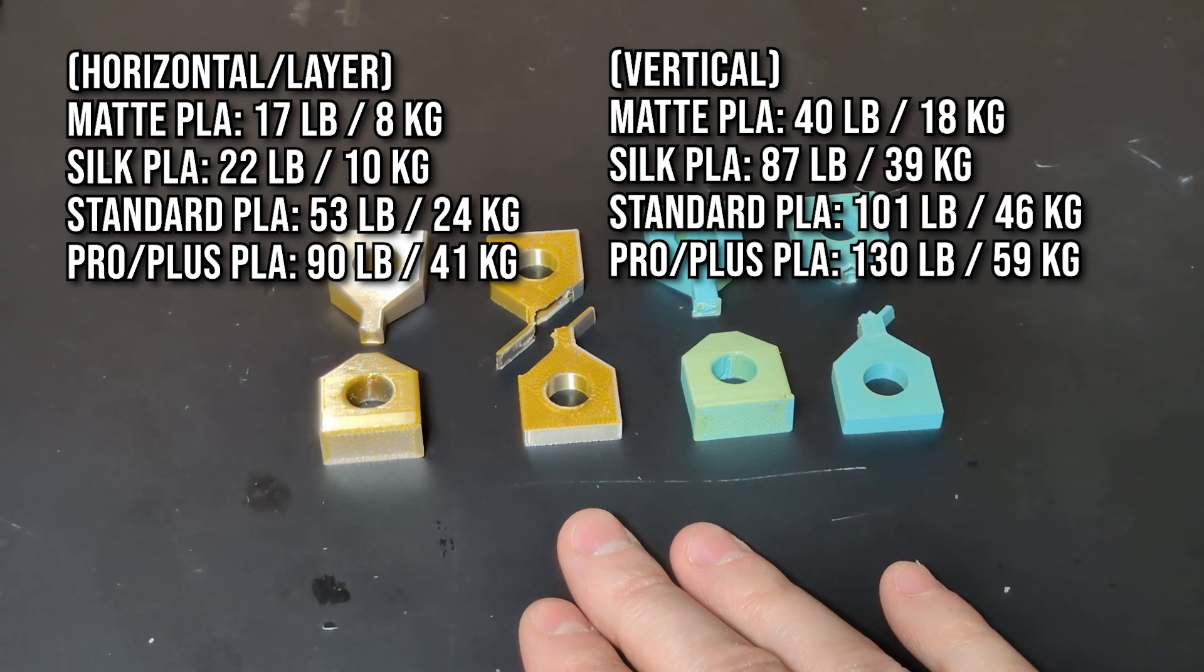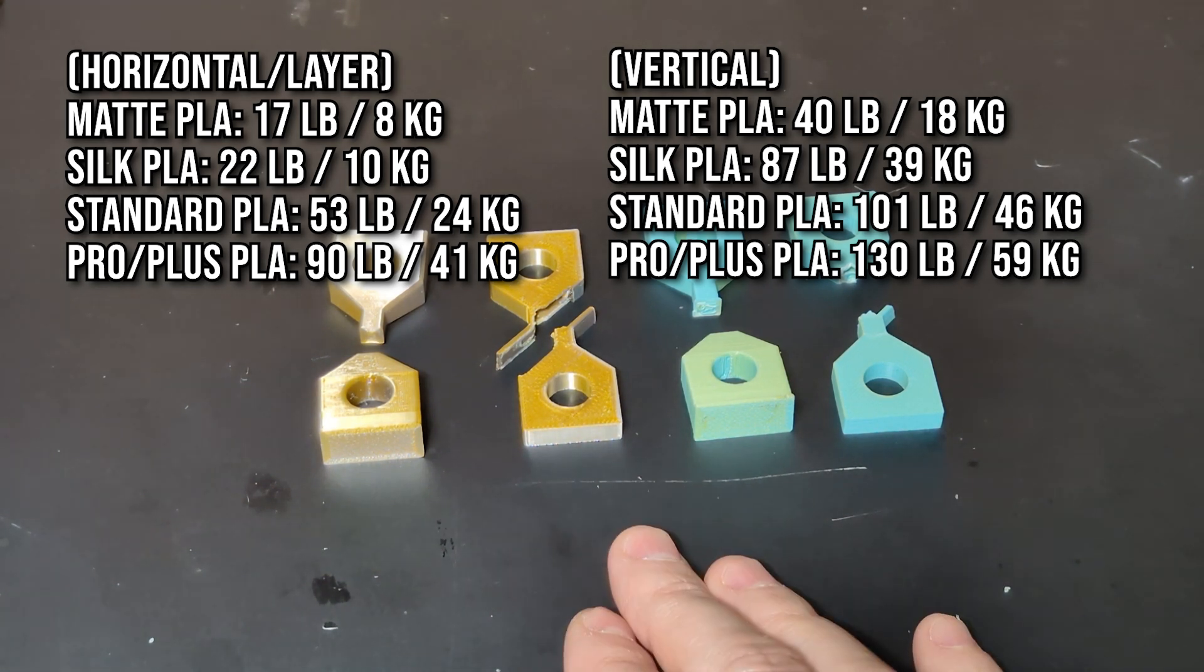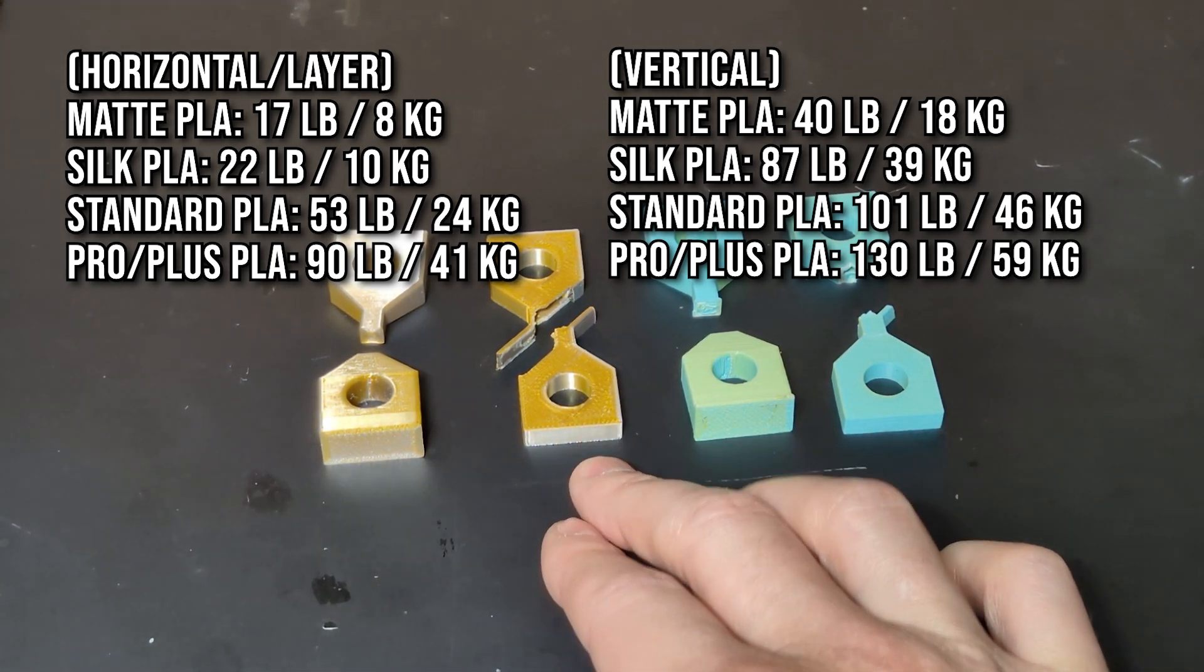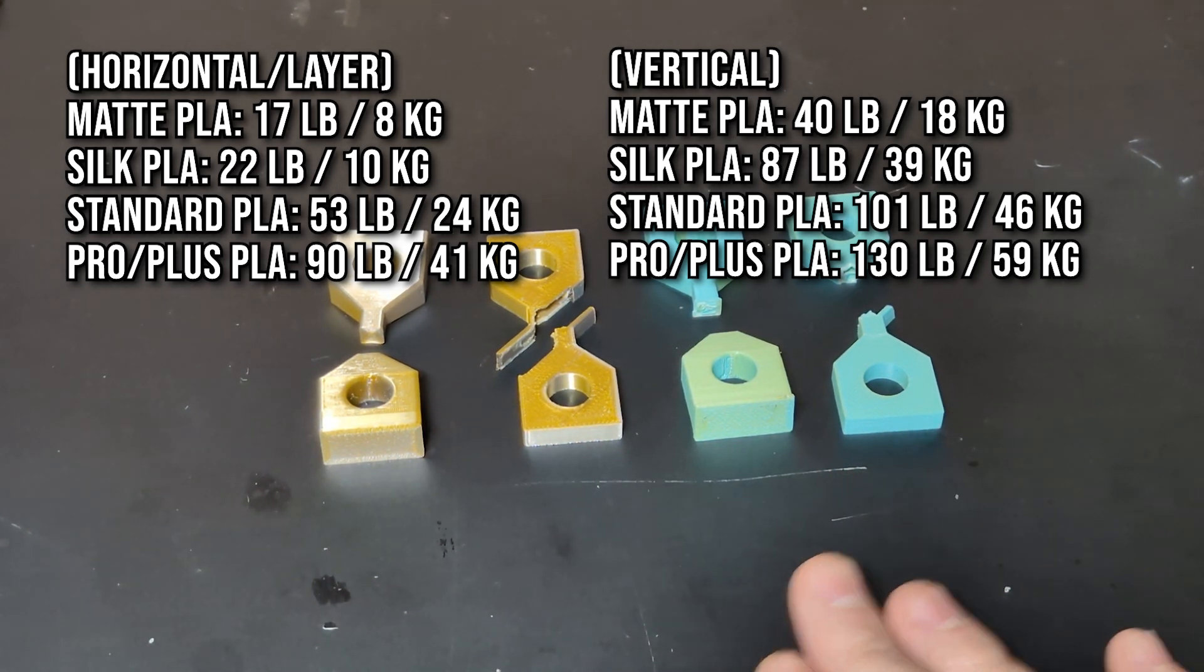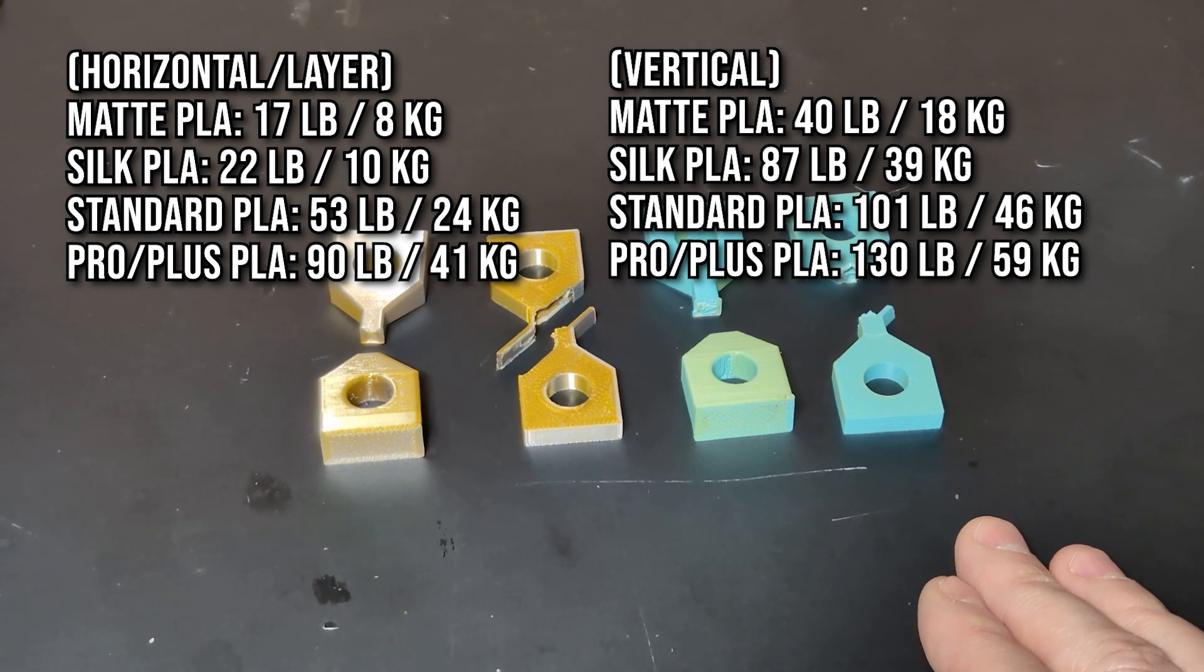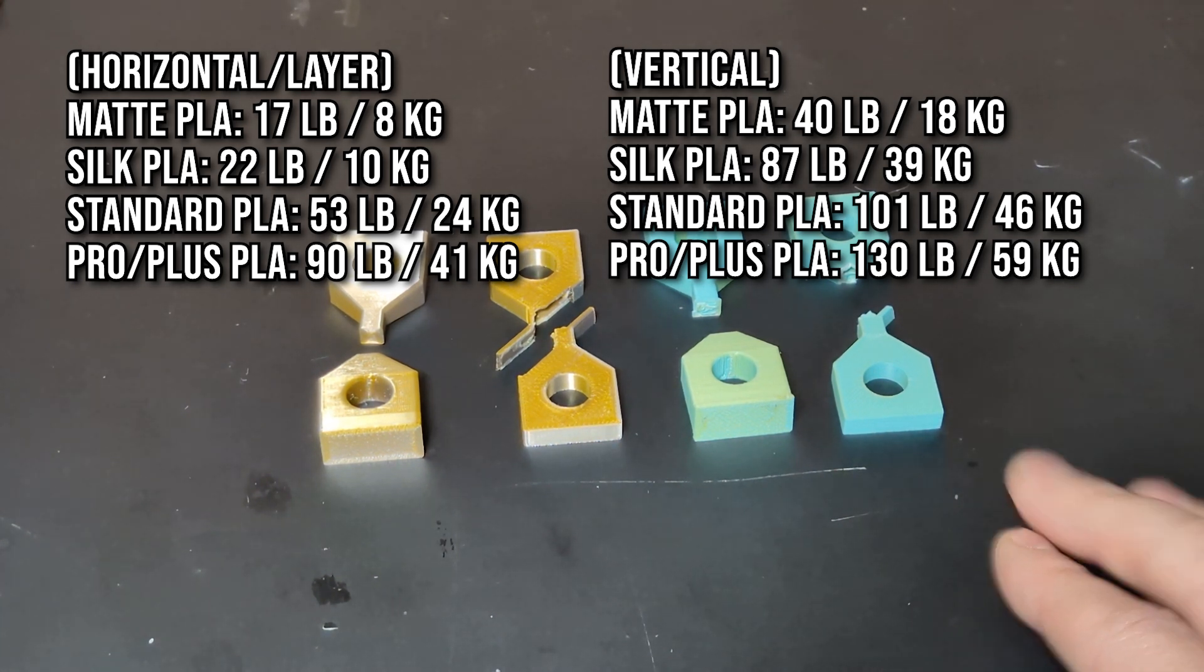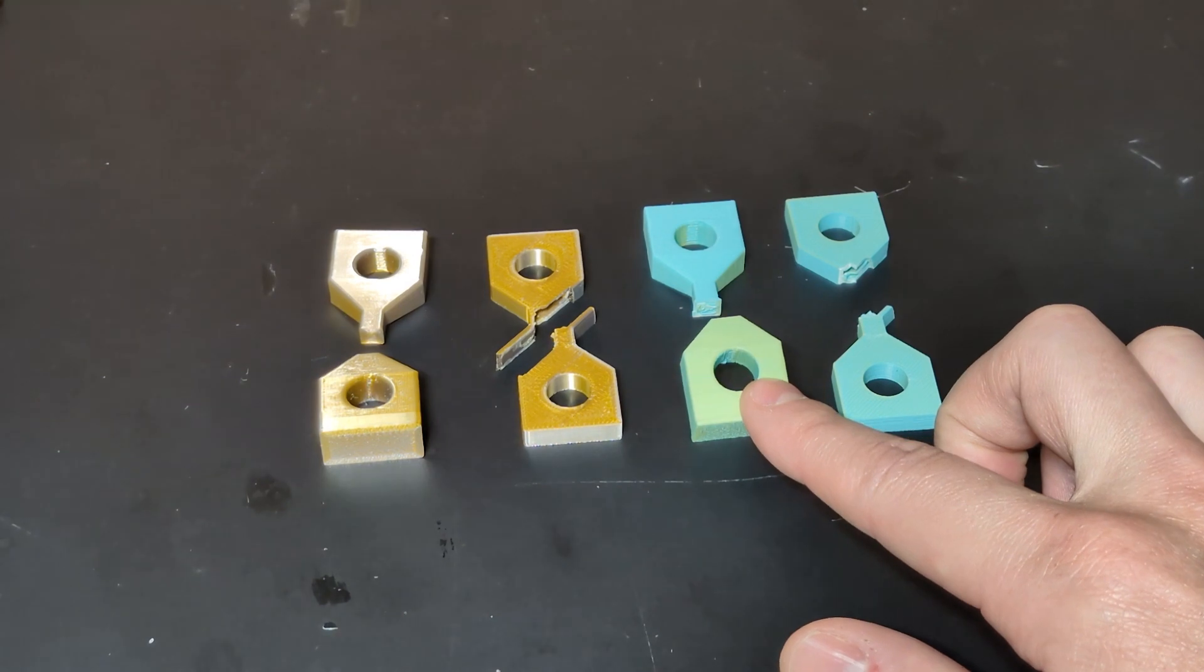Normal PLA, just standard PLA, layer adhesion is about 53 pounds before it breaks and 101 pounds on the other direction. The PLA pro or PLA plus type stuff, on the layer adhesion is about 90 pounds before it breaks and about 130 pounds on the other side. So even just normal PLA is significantly stronger than these types of filaments.